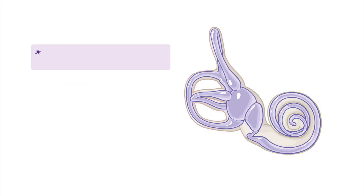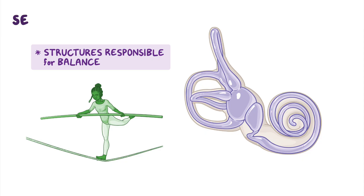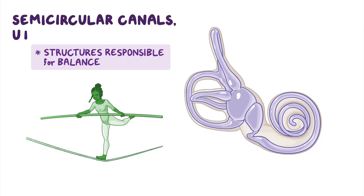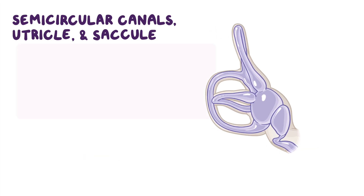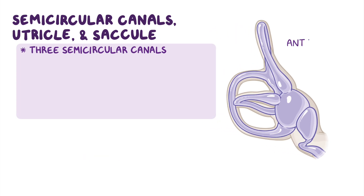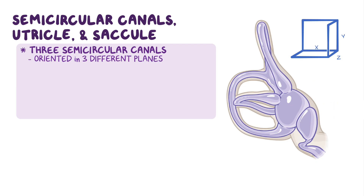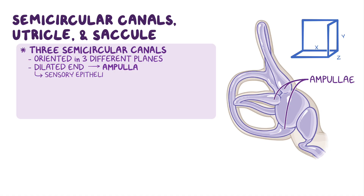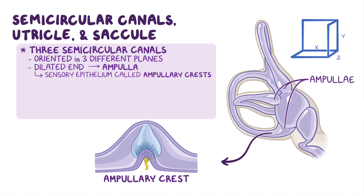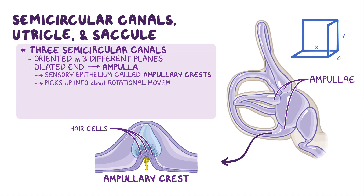Let's take a look at the structures responsible for balance, which are the semicircular canals on the one hand and the utricle and saccule on the other. There are three semicircular canals — an anterior, posterior, and lateral canal — oriented in three different planes of space. Each canal contains a dilated end called the ampulla, which contains an area of sensory epithelium called the ampullary crest. This is lined with tiny hair cells that pick up information about rotational movements of the head in the plane of the duct within which it is contained.